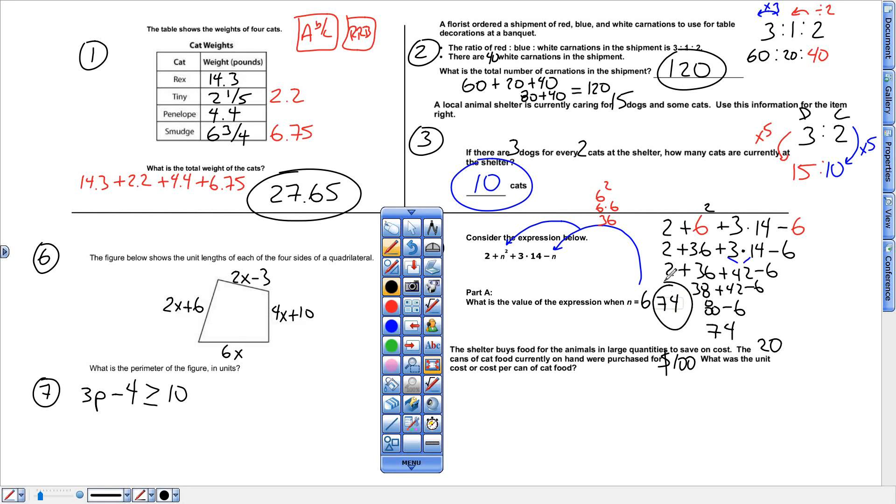All right, next one. Unit rate. Always dollars per unit. So this is $100 for every 20 cans. If I divide that 100, first on my calculator, divided by 20, it gives me the unit rate.